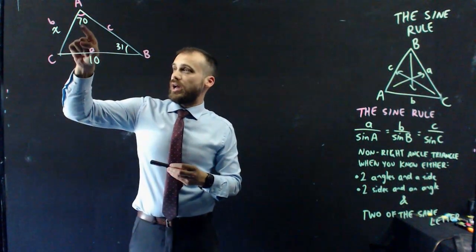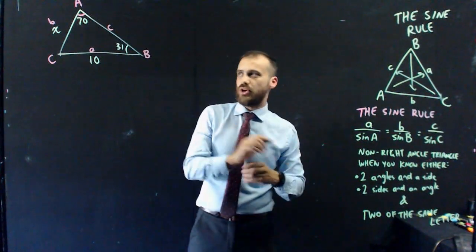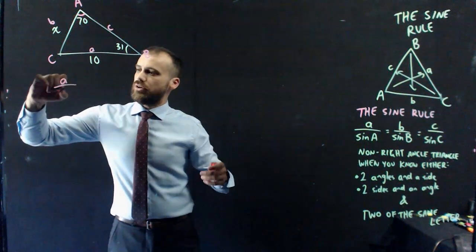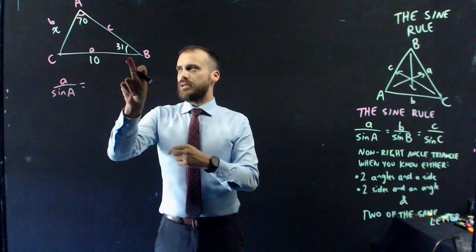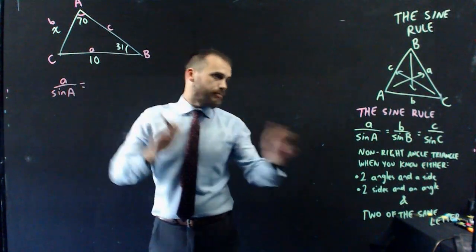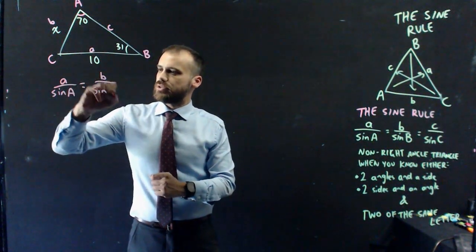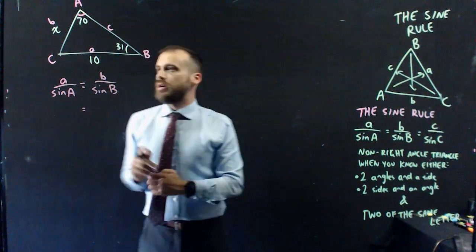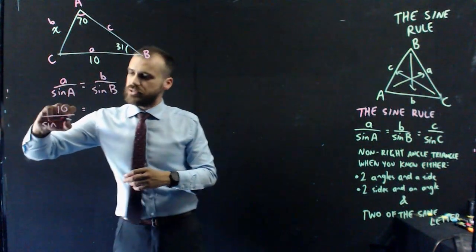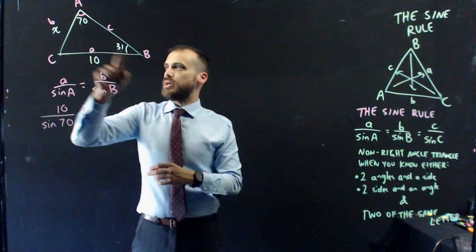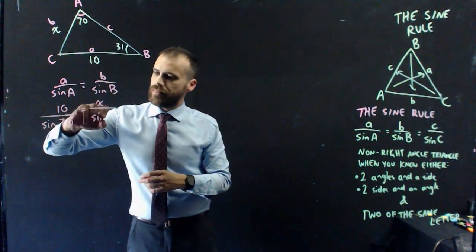I know A angle, and I know A side. So, I'm going to use this portion of my sine rule. I'm going to say A over sine A equals, and I know angle B, and I want to know side B. So, I'm going to use that portion of my sine rule. B over sine capital B. Now I'm going to sub in my values. A equals 10. Sine capital A equals 70. Small B is X. That's the thing I want to know.